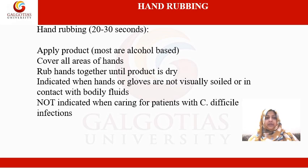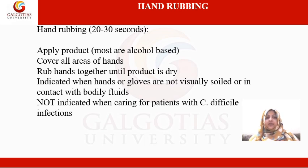For hand rubbing, once you make your hands wet and apply the sanitizer, you have to rub your hands for 20 to 30 seconds. Cover all areas of the hand using both hands rubbing each other, cleaning in between the fingers. Rub your hands together until the sanitizer becomes dry. This is indicated when your hands or gloves are not visually soiled or are in contact with body fluids.